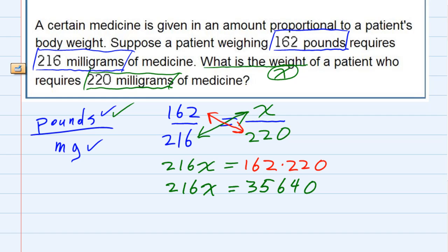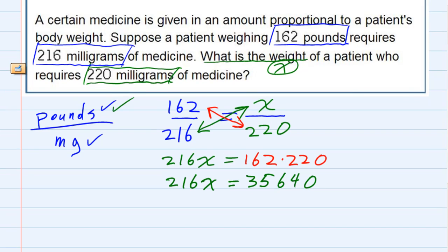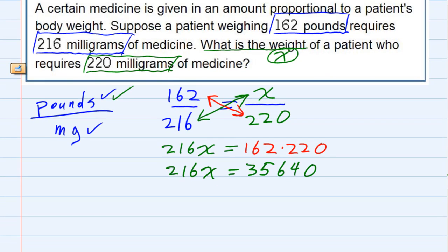So 216X equals 35640. That's a larger number, but we still have one step to go, and that is we have to solve this for X. If we divide both sides by 216, those will cancel on the left-hand side, leaving me with just X. And that's what I wanted.